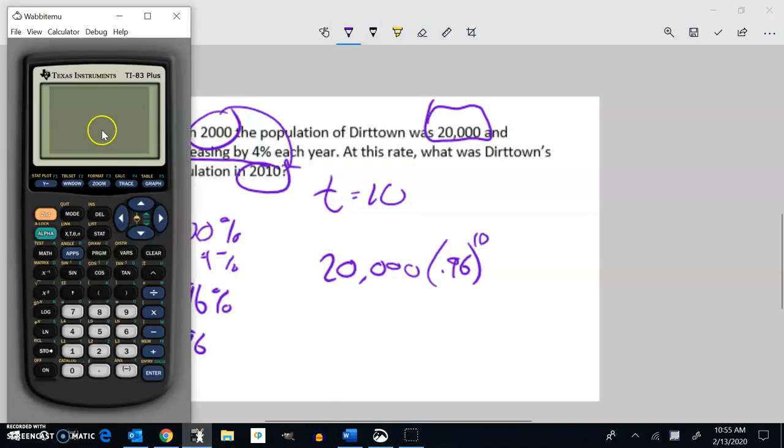Let me shove that into my calculator. 20,000 times 0.96 to the power of 10.